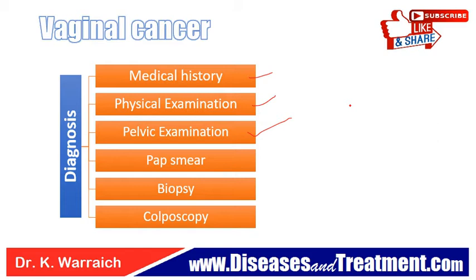A biopsy is a test where a piece of tissue is taken from inside a growth and checked under a microscope to determine whether it is benign or malignant. Colposcopy is a procedure in which a colposcope — a lighted magnifying instrument — is used to check the vagina and surface of abnormal areas. Tissue samples may be taken using a curette, a spoon-shaped instrument, and checked under the microscope for signs of disease.